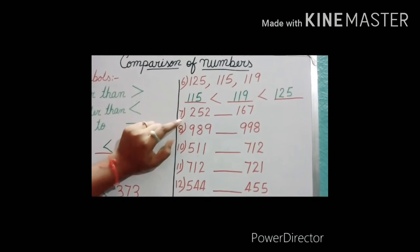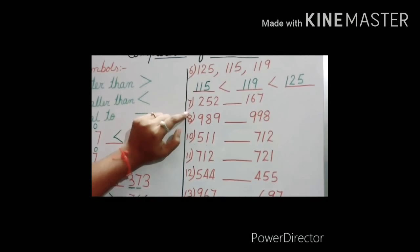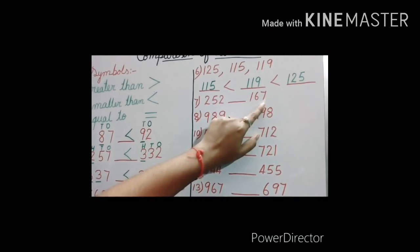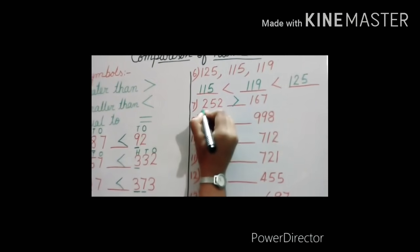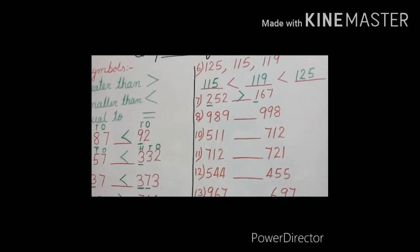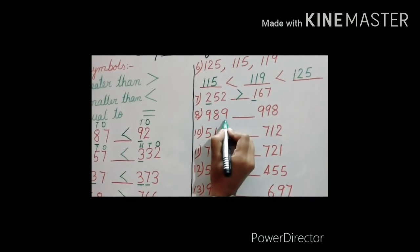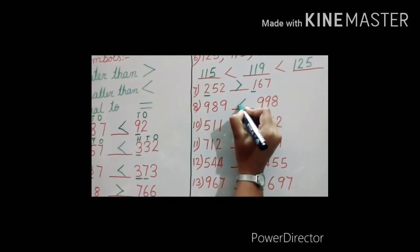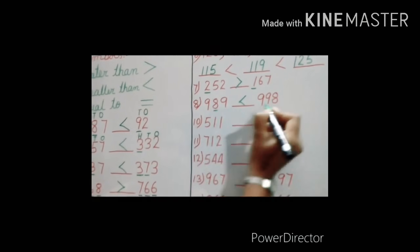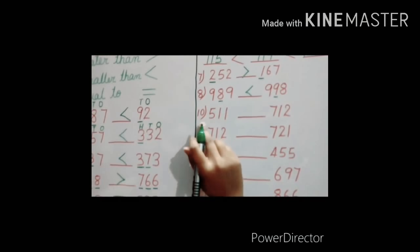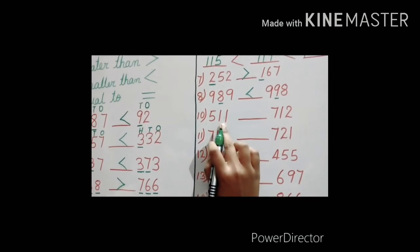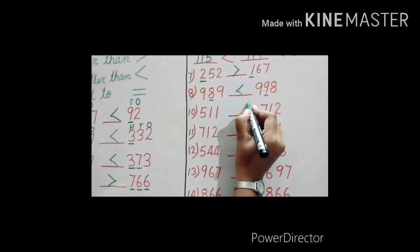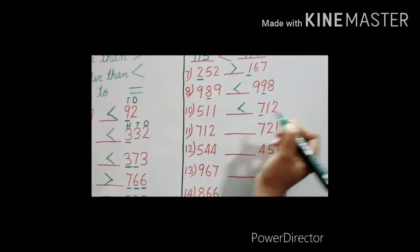Tell me question number 7: what sign will I put — 252 or 167? 252, because 2 is greater than 1. Question number 8: 989 or 998? 998, because the second place digit 9 is greater. Question number 10: 511 or 712? 712, because 7 is greater than 5.